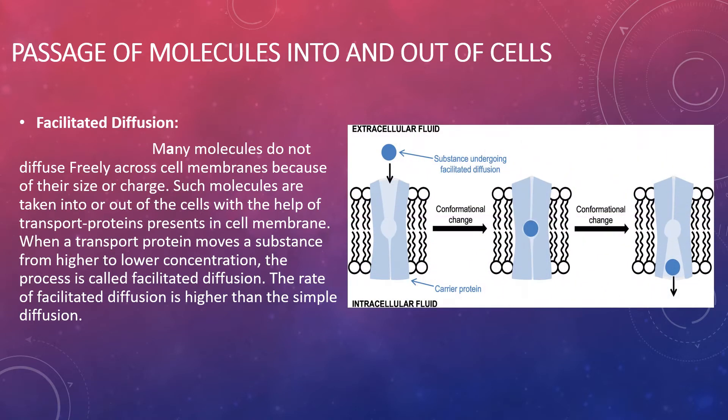As you can see in the diagram showing the transportation of molecules, there is a question of how they are moved. The answer is that such molecules are taken into or out of the cell with the help of a transport protein. The light glucose shades represent the transport protein and the dark glucose are the molecules which are moved through the transport protein, which is present in the cell membrane. The definition of facilitated diffusion is: when a transport protein moves a substance from higher concentration to lower concentration, this process is called facilitated diffusion.